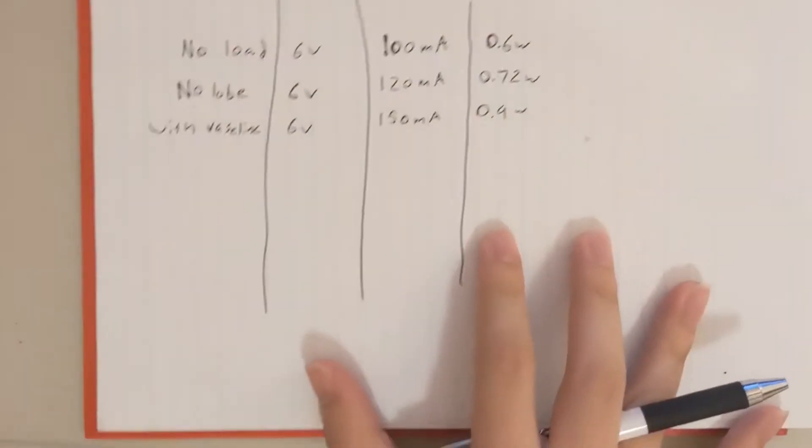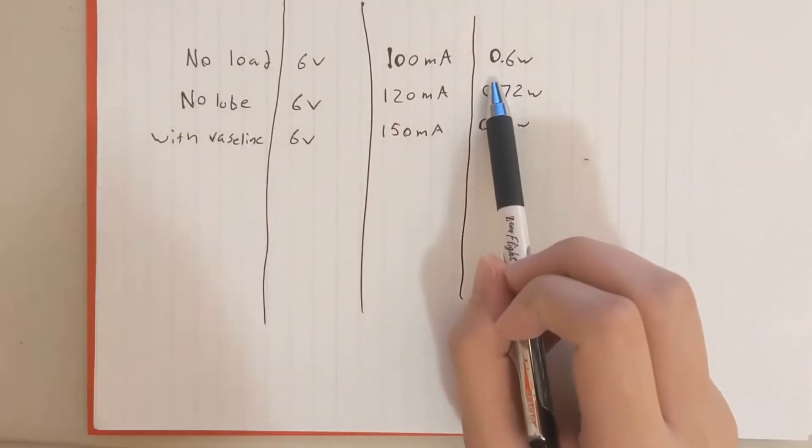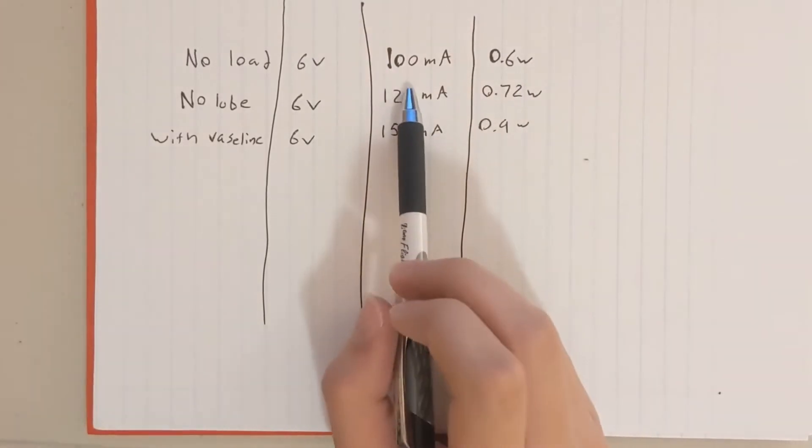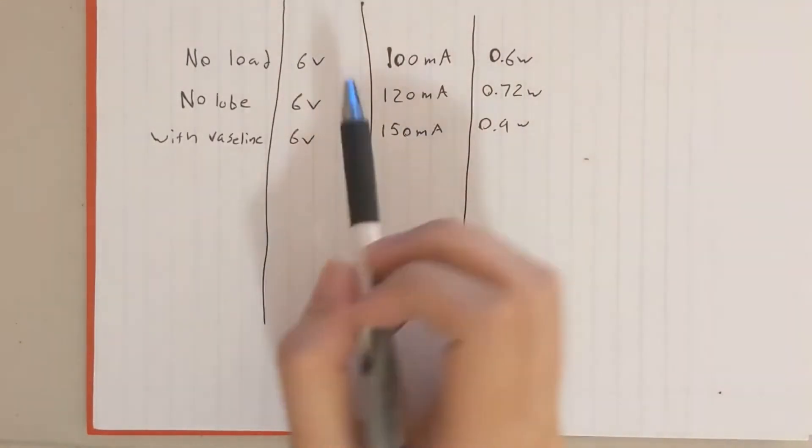Okay so let's look at some data. So with no load, just the motor running, no gears attached to it, we are using 0.6 watts at 100mA at 6 volts. So that's like the baseline we use.